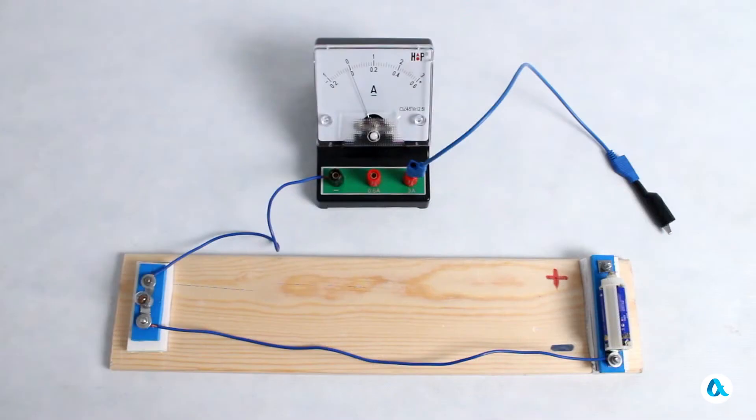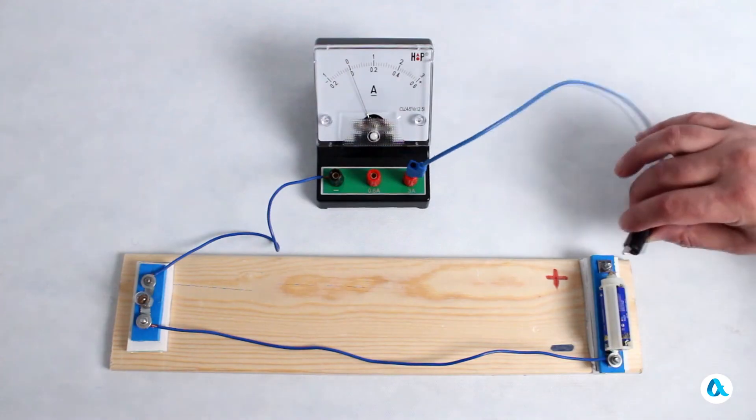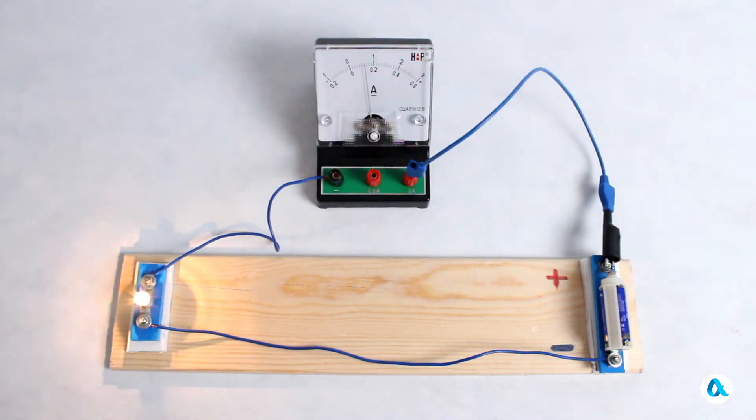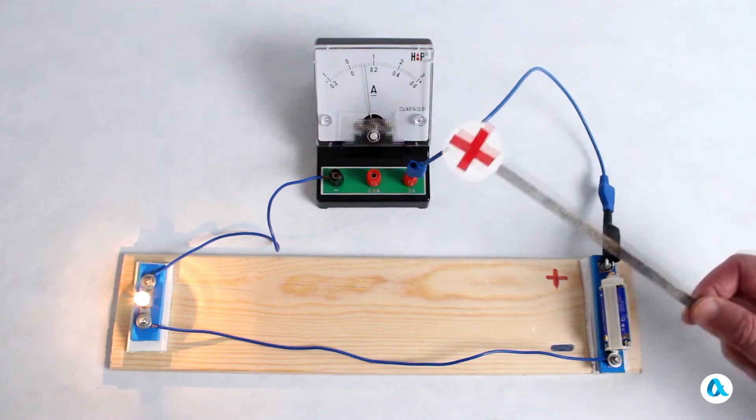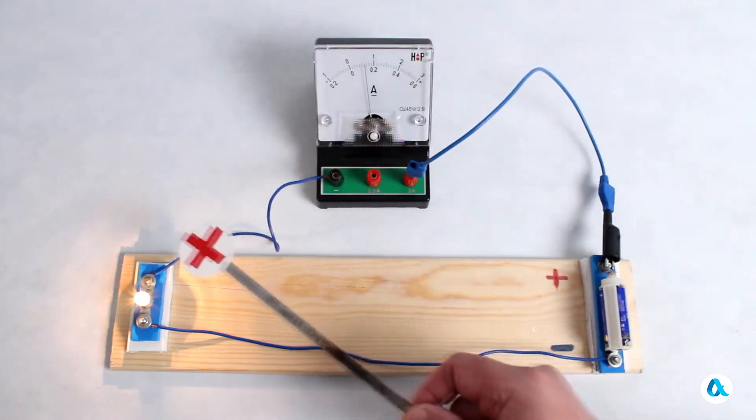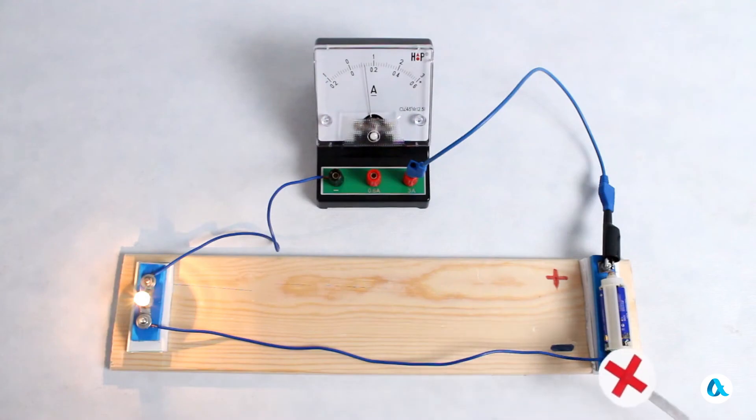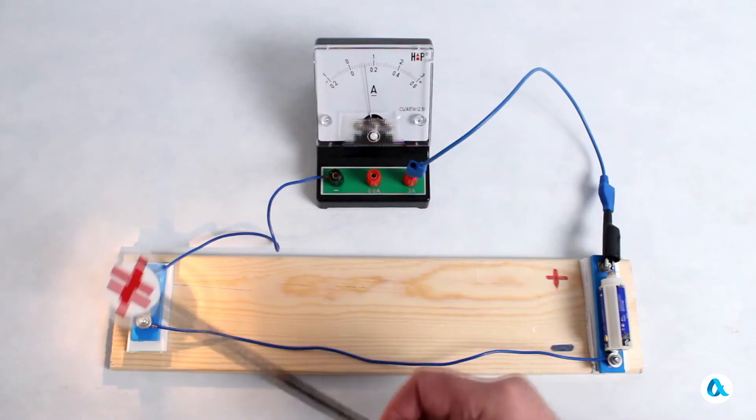We've assembled a circuit consisting of a battery, a light bulb and an ammeter which will measure the current. Let's close the circuit. The light bulb lights up and the ammeter shows a current of 6 tenths of an ampere. This means that every second a charge equal to 6 tenths of a coulomb flows through the circuit. If we assume that positive charges are flowing through the circuit, then they move from the positive terminal of the battery through the ammeter and the light bulb to the negative terminal of the battery. Then they pass through the inside of the battery and continue moving around this loop.